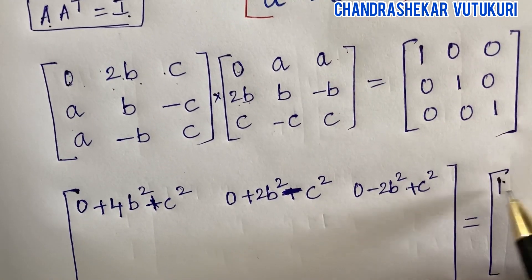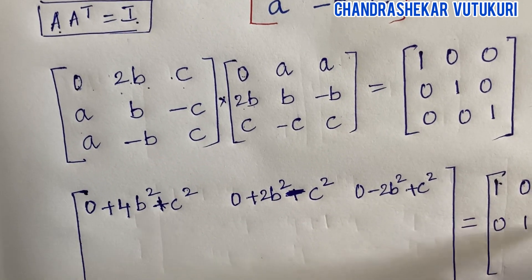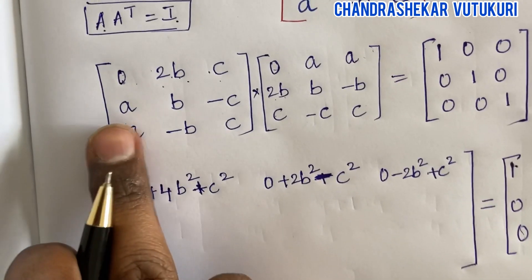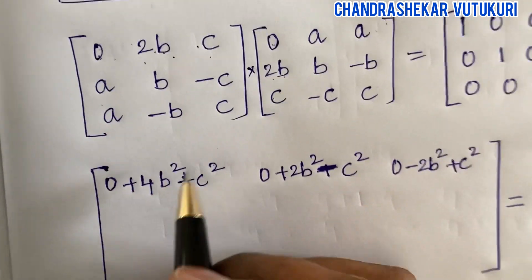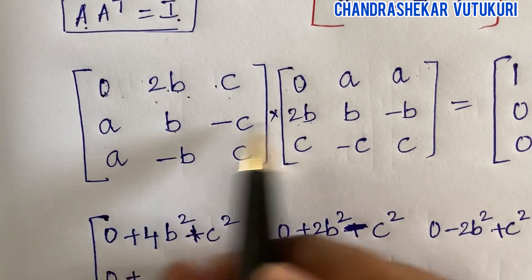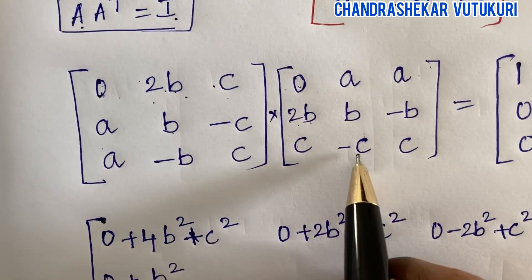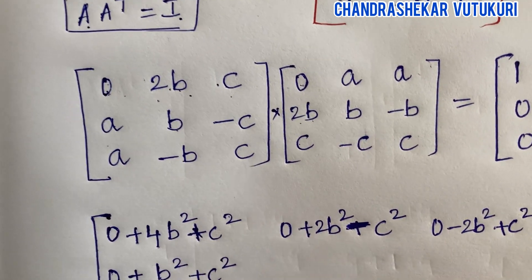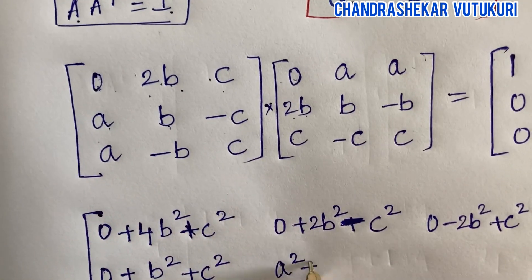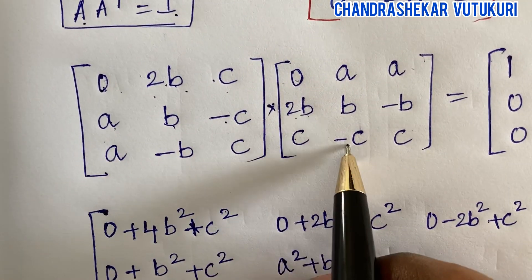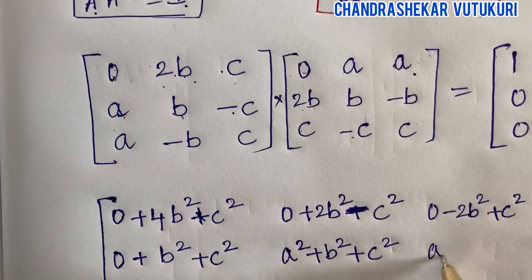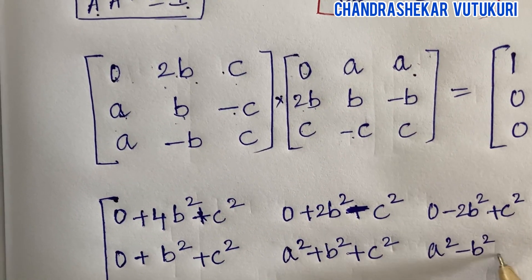The identity matrix of size three by three is: one zero zero, zero one zero, zero zero one. For the second row multiplied by the first column: a times zero is zero, b times b is b squared, and minus of minus gives plus c squared. For the second element: a times a is a squared, b times b is plus b squared, c times minus of minus gives plus c squared. For the third: a times a is a squared, minus b squared, minus c squared.